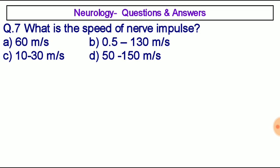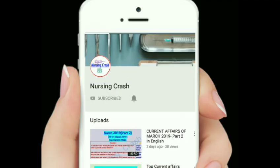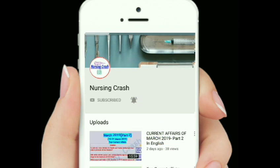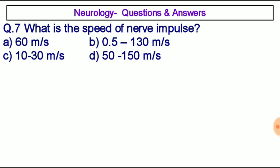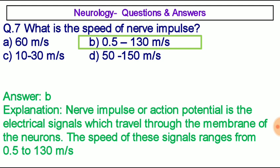Question number seven: What is the speed of nerve impulse? Option A: 60 meters per second, option B: 0.5 to 130 meters per second. The correct answer is option B, 0.5 to 130 meters per second. Nerve impulse, or action potential, is the electrical signal that travels through the membrane of the neuron. The speed of these signals ranges from 0.5 to 130 meters per second.